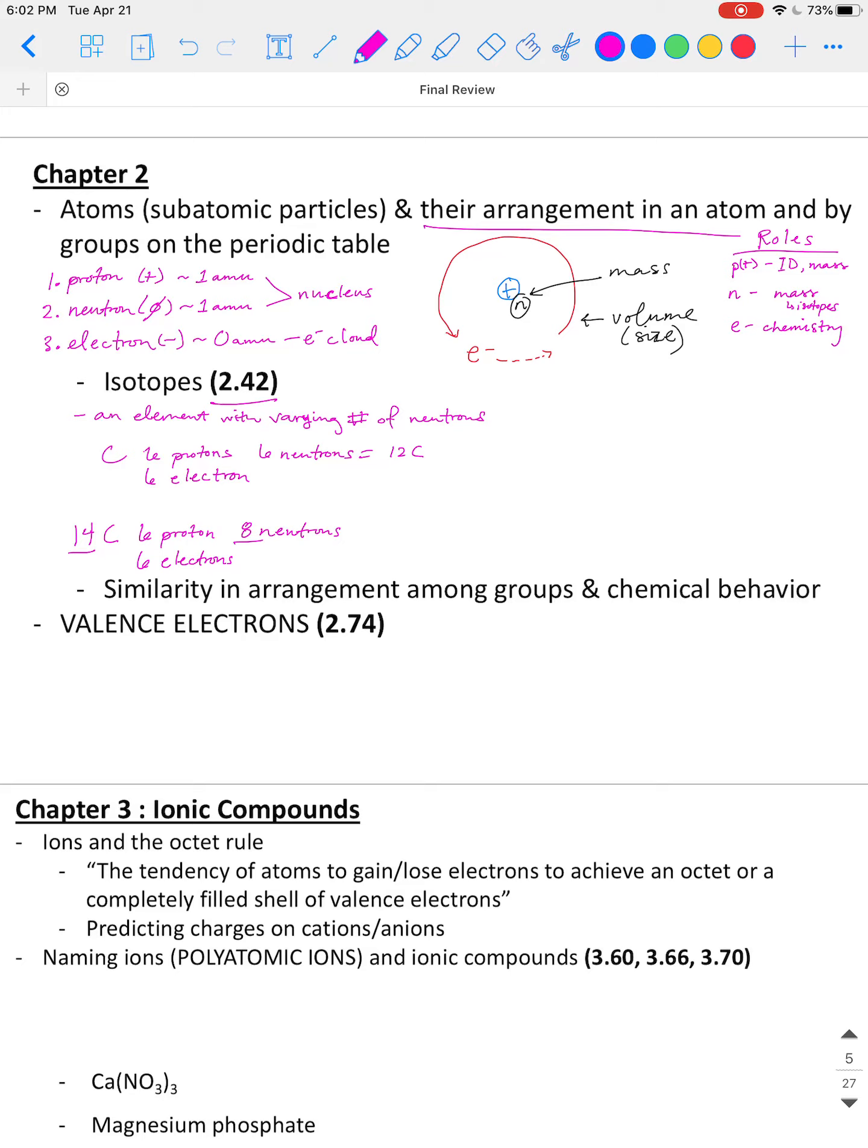What was next? Similarity and arrangement among groups and chemical behavior. So all that's saying is you need to understand and remember that things within the same group, and a group is a vertical column on the periodic table, not a horizontal row. So elements within the same vertical column or the same group, they're going to behave similarly. We have certain names for different columns. Remember that group 1 and 2, we call the alkali metals or the alkali earth metals. Group 2 is the alkali earth metals. Group 7, we call the halogens. Group 8, we call the noble gases.